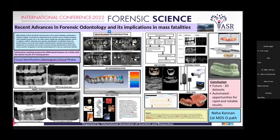Coming to dental records, there are numerous types. Initially there were written dental records, which are the least useful — they are subjective in nature and have a higher error rate. Next is the odontogram, which is basically a stylized diagram of a date on which planned and executed dental interventions can be recorded in a visual format. Then we have clinical photos, which are less helpful when the body is incinerated or has undergone decomposition.